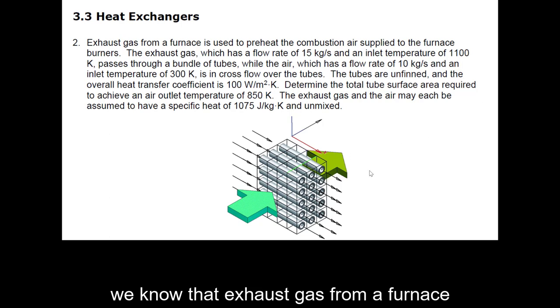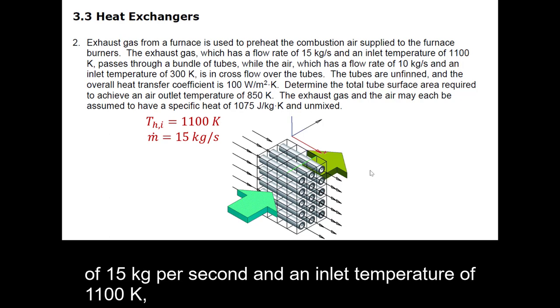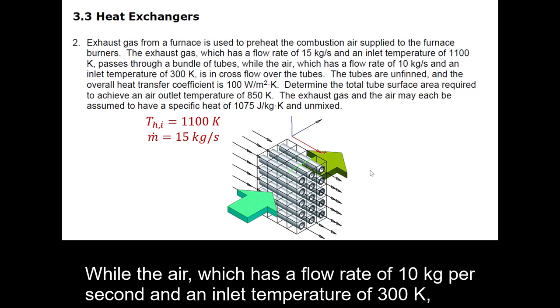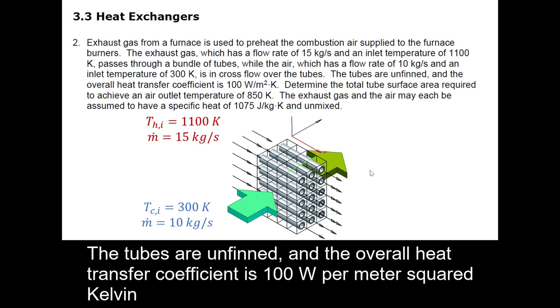We know that exhaust gas from a furnace is used to preheat the combustion air supplied to the furnace. The exhaust gas, which has a flow rate of 15 kg/s and an inlet temperature of 1100 K, passes through a bundle of tubes. The air, which has a flow rate of 10 kg/s and an inlet temperature of 300 K, is in cross-flow over the tubes.